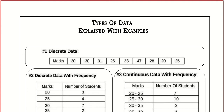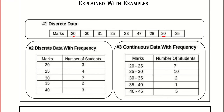Mode is very easy to compute, but remember sometimes mode may not exist. In Type 1 raw data — for example, 20 repeats twice while 30, 31, 25, 23 do not repeat — so the mode is 20. The item with the maximum frequency is the mode. In Type 2, with a frequency table, it is also easy: the mark 30 repeats seven times, more than any other value, so the mode is 30.